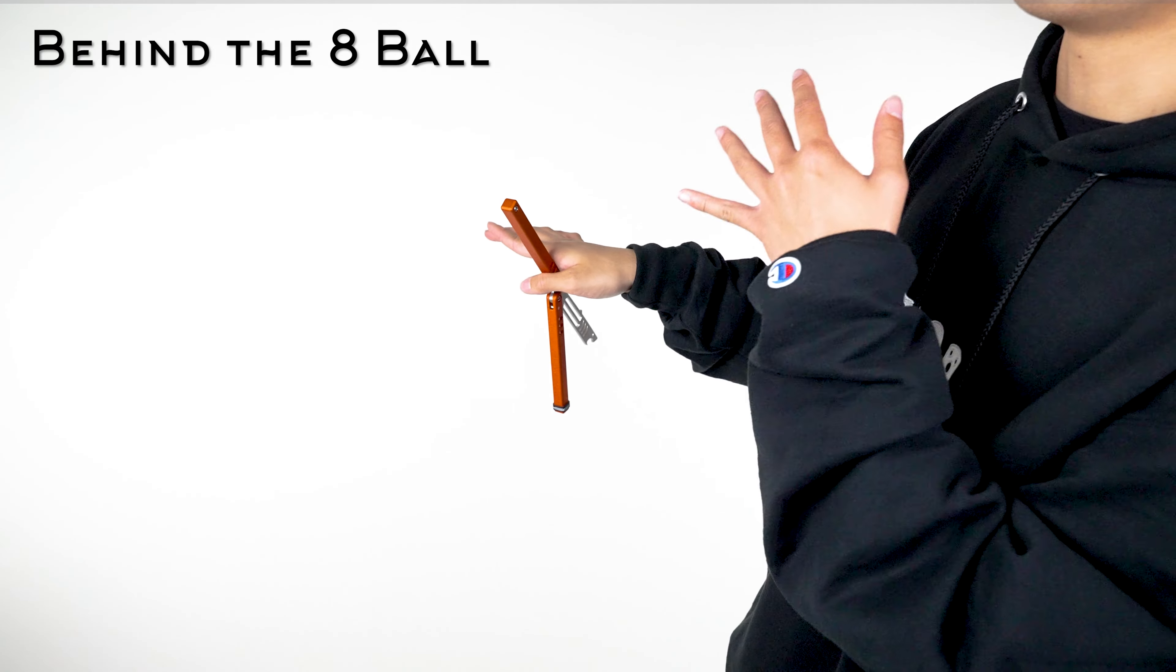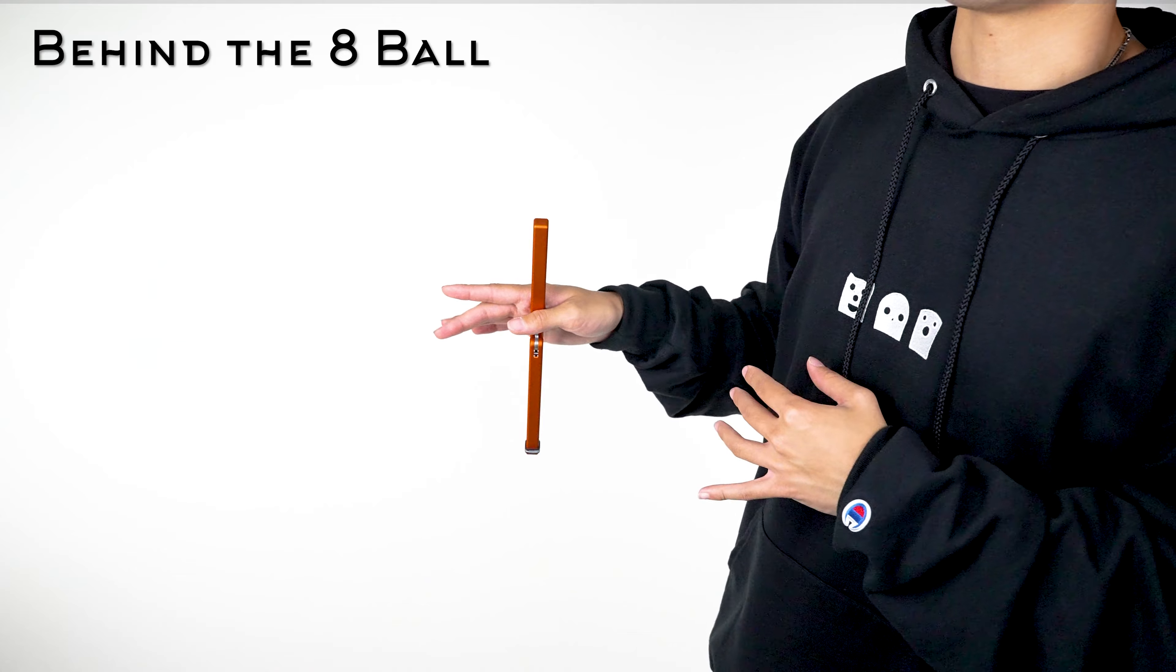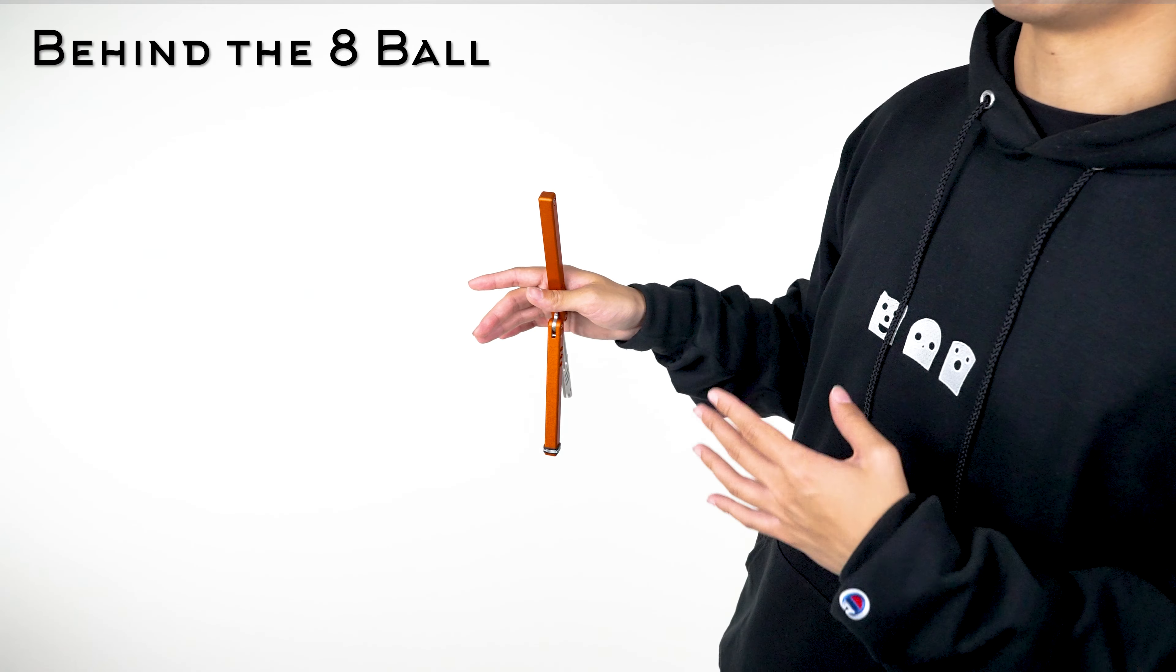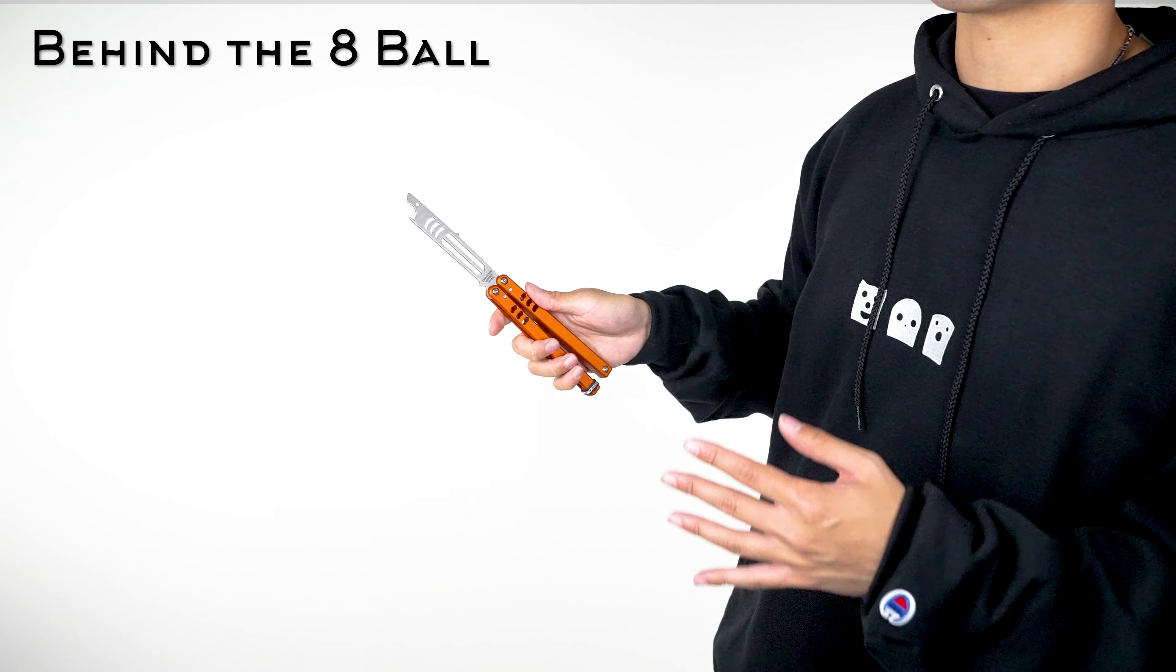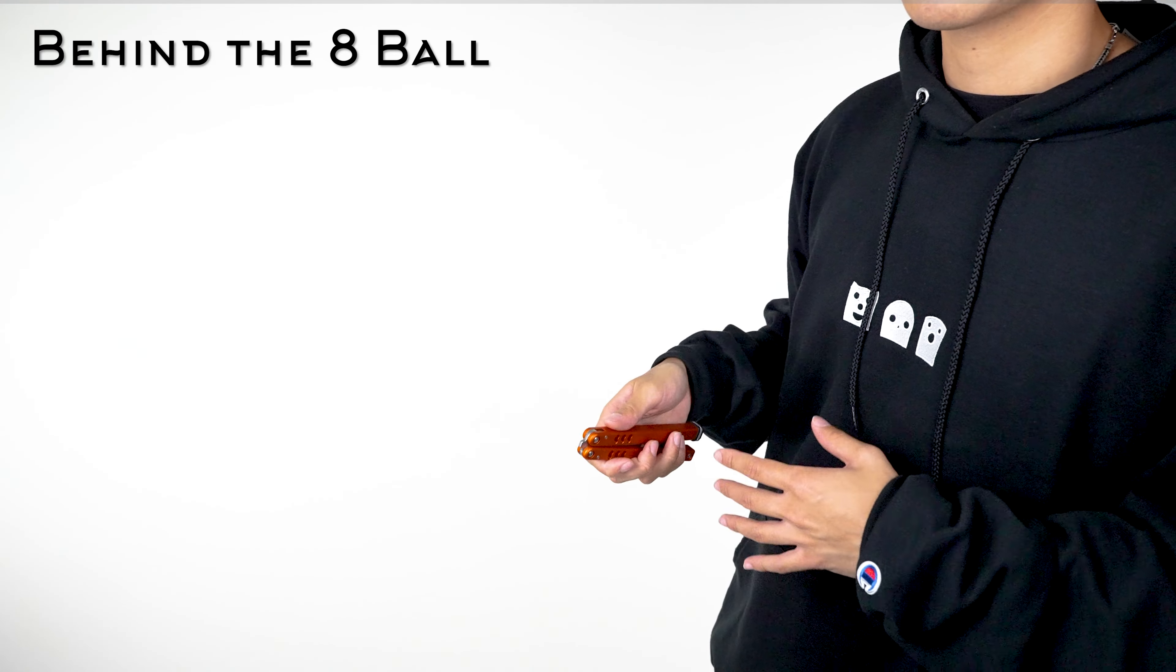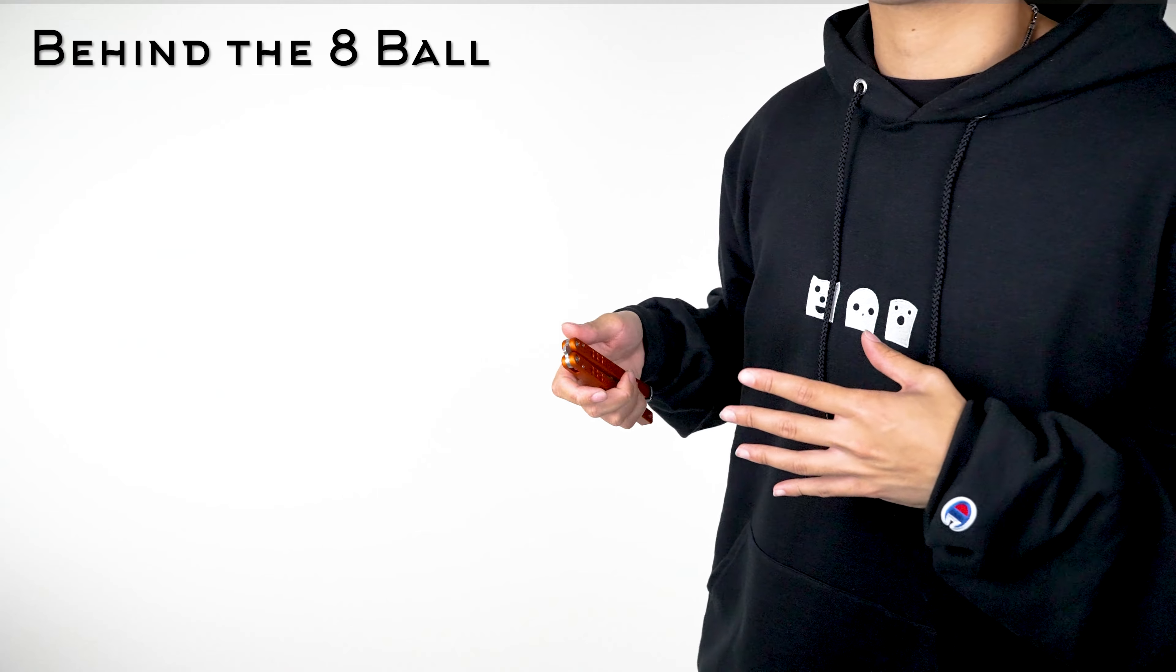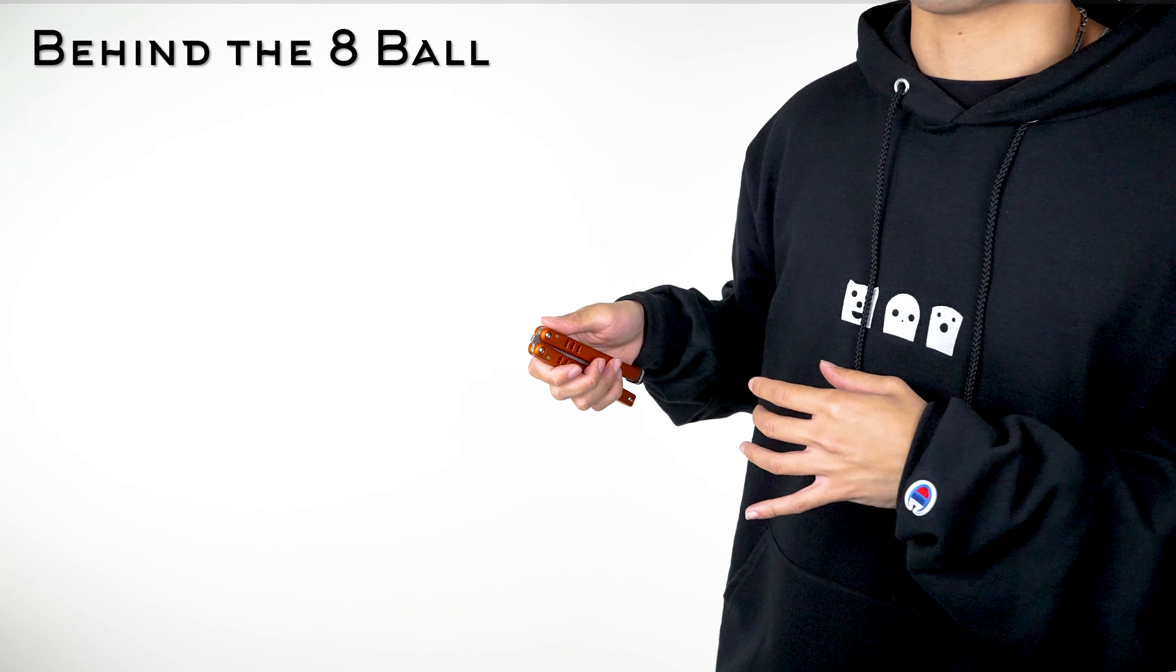And then you can do one thumb roll over and then the wrist pass and end off the trick. So if you already learned the thumb roll over this part should be easy. Just throw it, get into that wrist pass and you've done the behind the eight ball. If you break it down into those movements, then you'll probably get this trick down a little bit easier.